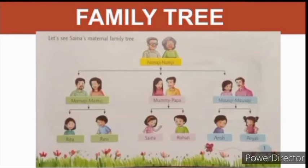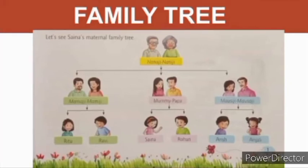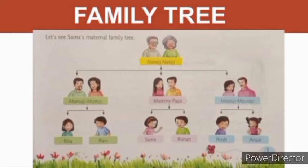Let us see Sanya's maternal family tree. This is a picture given in your book of a family tree. Maternal means related through mother's side. So, Nana ji and Nani ji are at the top. They are having three children: Mama ji and Mammy ji — Mammy papa means Sanya's mother and father — and Mousi ji and Mousa ji.